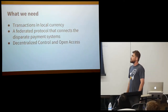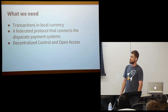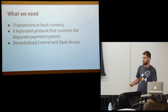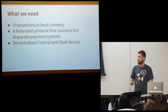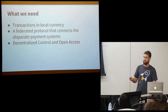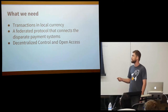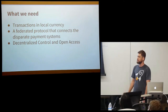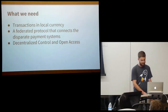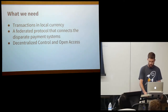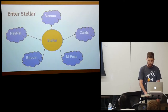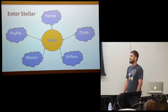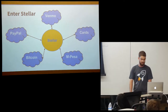So what do we need? We need transactions in local currency. We need people to choose the system they want to use, not be forced into one system or currency. We need a federated protocol between different systems to enable an interconnected, interoperable payment system — decentralized, with open access no matter what country you're from or what your bank account looks like. This is where Stellar comes in: a decentralized global payment network enabling interoperability between various payment systems.